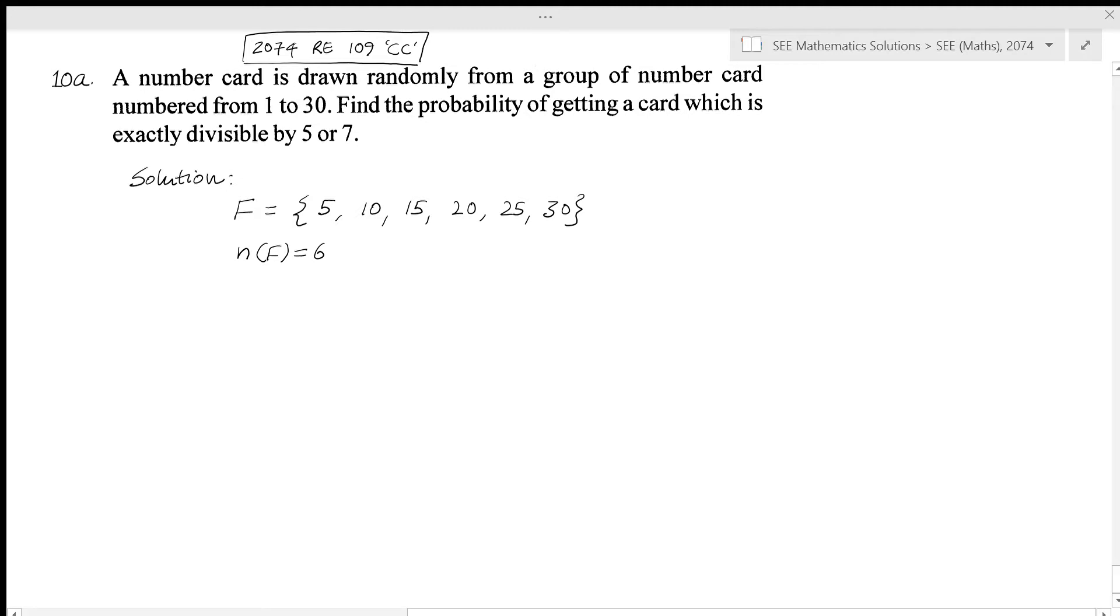And similarly, set S means multiples of 7. So here we have 7, 14, 21, and 28. So the number of multiples of 7 are 4.